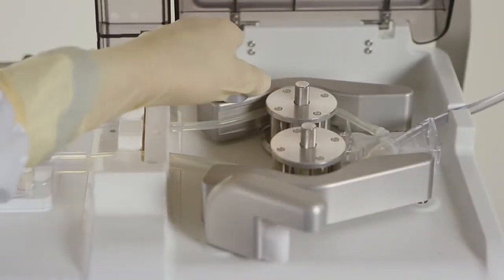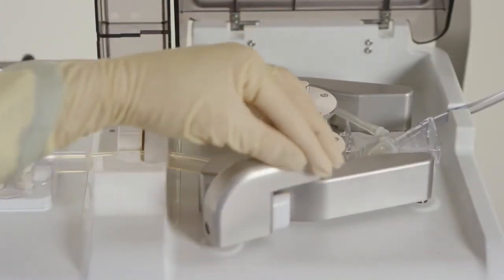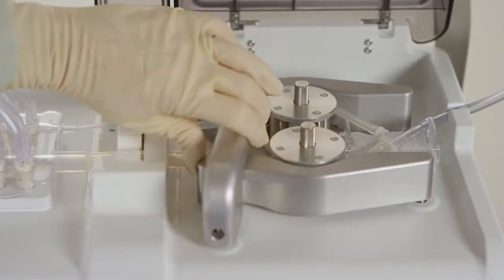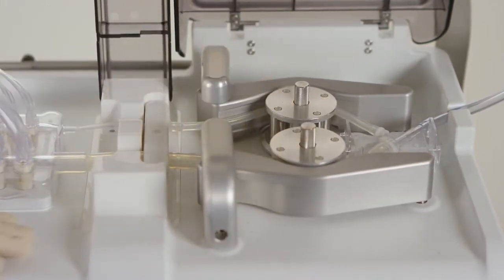Rotate the platen locks toward the platens to secure the platens in place around the tubing. The tubing should appear slightly compressed.